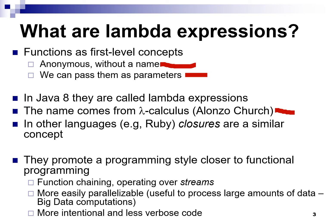In Java 8 they are called lambda expressions, but in other languages like Ruby they are called closures, which is also a very common name. Lambda expressions were a very important addition to Java 8 because they allow a programming style which is close to functional programming.